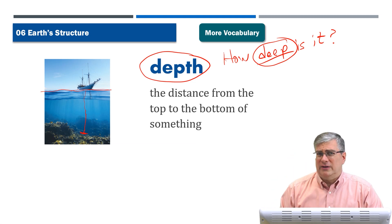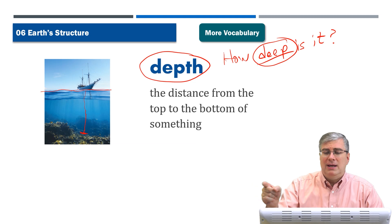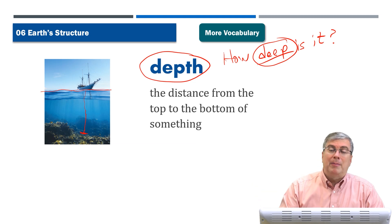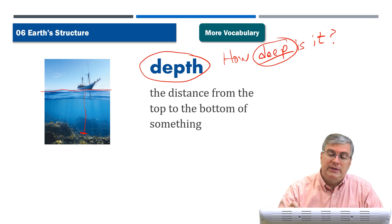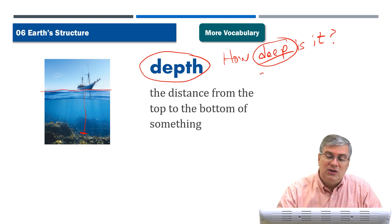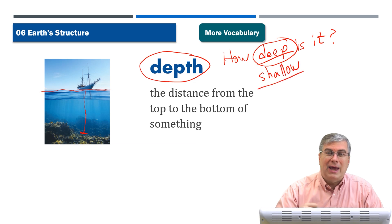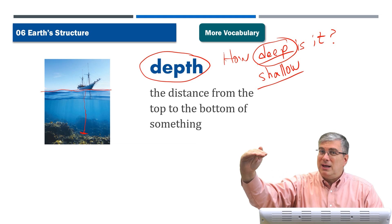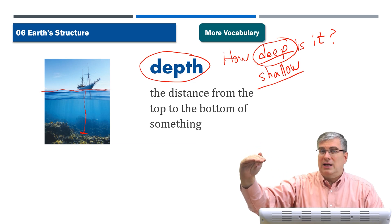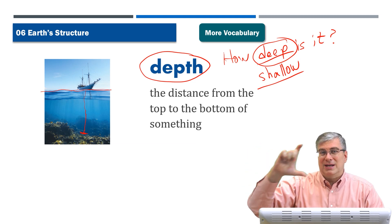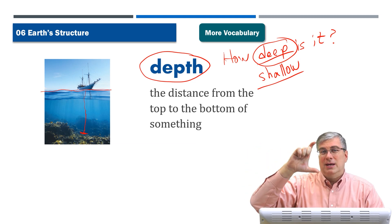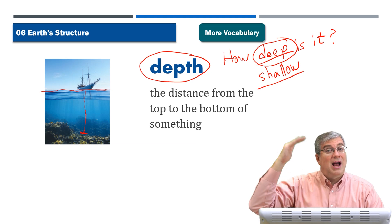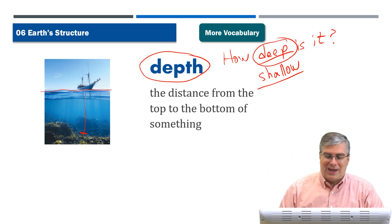You could say, like, the swimming pool has a deep end — and the opposite of deep is shallow. You have the shallow end of the swimming pool where you can stand up, but then the deep end you cannot stand up because the depth is more than your height.